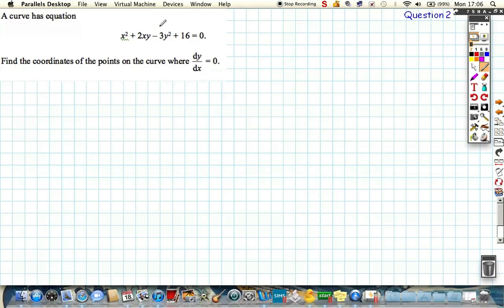So we clearly need to differentiate this expression here, but because it's a function of x and y, we're going to differentiate implicitly. So if we differentiate term by term, we get the following. Again, 2x plus, differentiating this as a product of 2x and of y,